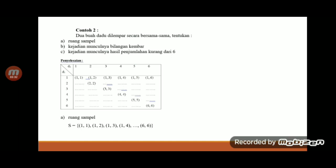Terus untuk yang B kejadian munculnya bilangan kembar. Berarti 1,1, 2,2, 3,3, 4,4, 5,5, 6,6. Berarti ada 6.